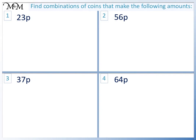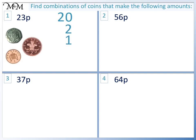Here are some questions for you to try. Find combinations of coins that add to make the following amounts. There may be more than one way to do this. Pause the video and have a go. Question 1: We have 20p, 2p and 1p. We can see that 0 plus 2 plus 1 equals 3, plus two tens make 23p in total. Question 2: We have 20p, 10p, 5p and 2p.